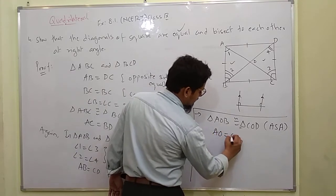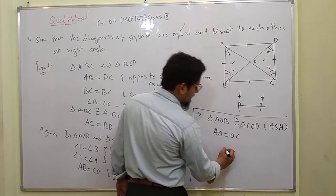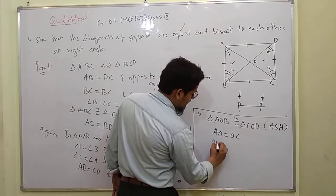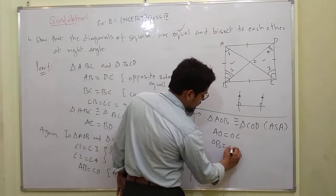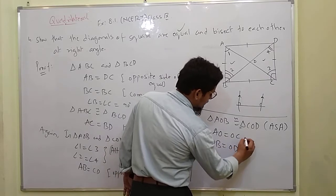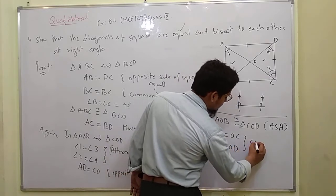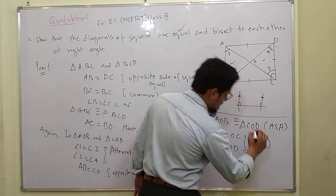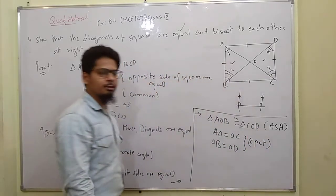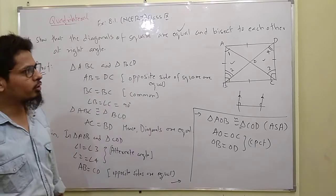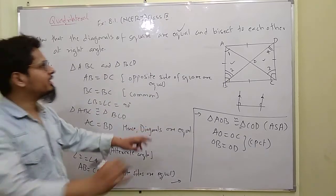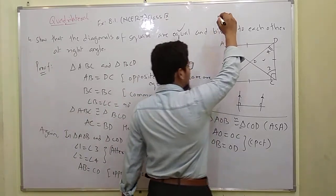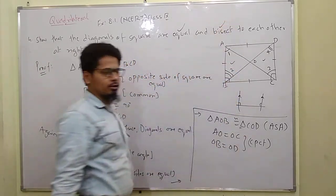And by CPCT we can write: AO is equal to OC, and OB is equal to OD. These two conditions are the result of CPCT. So this point has been proved — the two diagonals bisect each other.